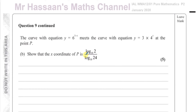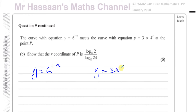Now question part B. It says the curve with equation y equals 6 to the power of 1 minus x meets the curve y equals 3 times 4 to the power of x at the point P. Show that the x-coordinate of P is log base 10 of 2 over log base 10 of 24. They're going to meet when you solve these two equations simultaneously — so when you want to find where two curves intersect, you solve the equations simultaneously.